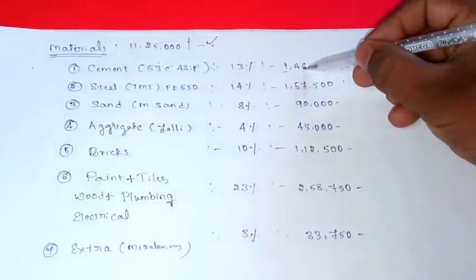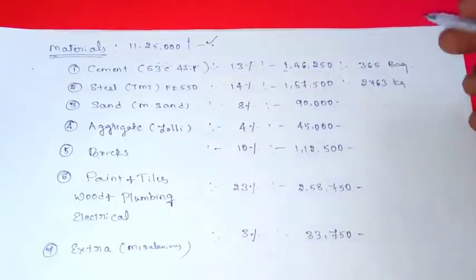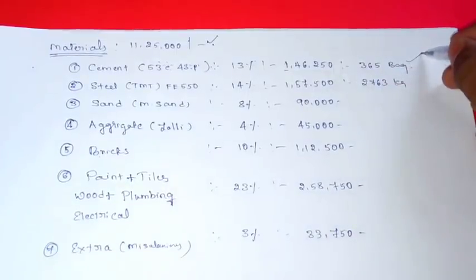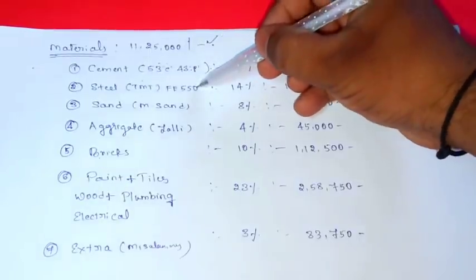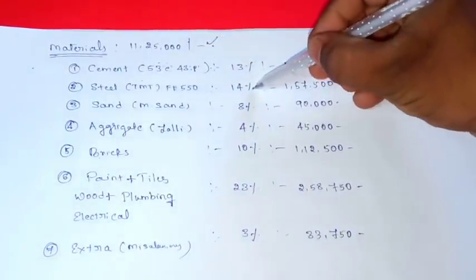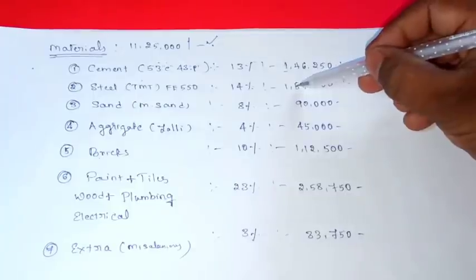This is the only cost for cement. This is steel. This is the TMT, this is called 50.5 percent. This is the only cost of steel.